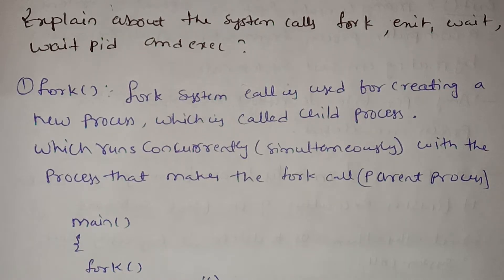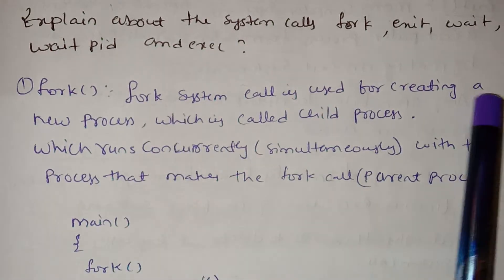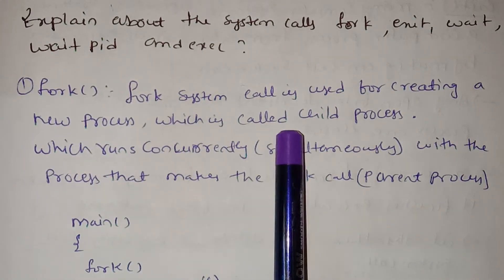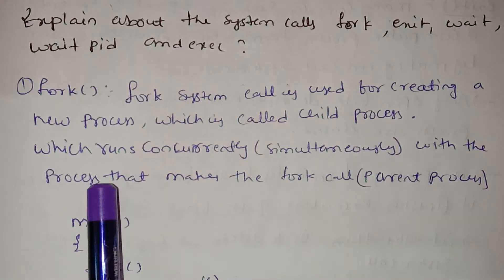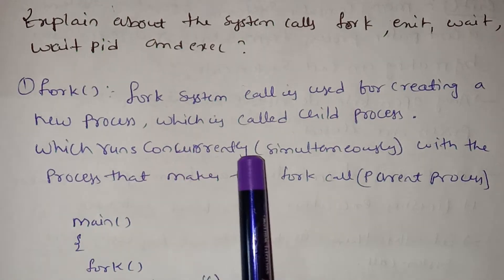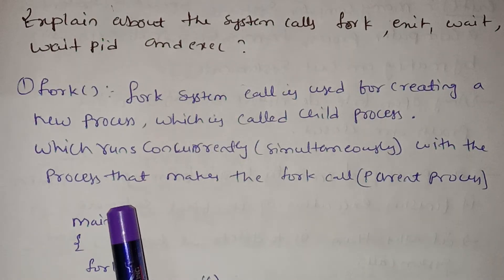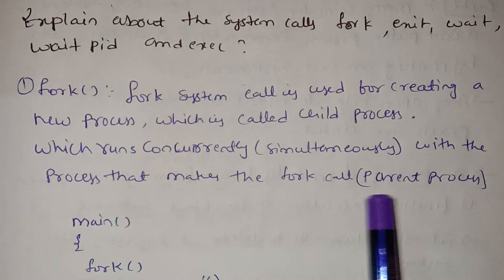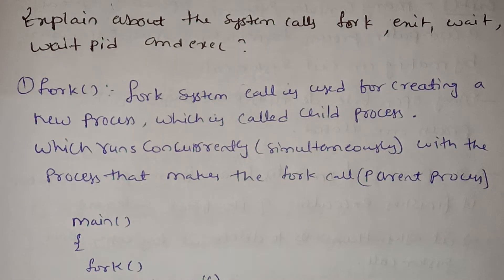Fork system call is used for creating a new process, which is called the child process, which runs concurrently and simultaneously with the process that makes the fork call. That process is called the parent process.